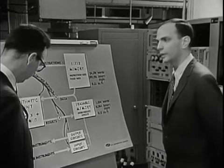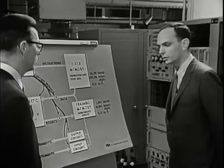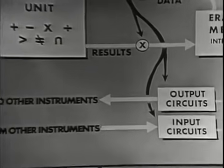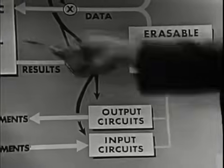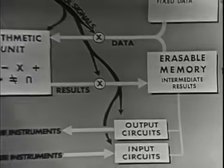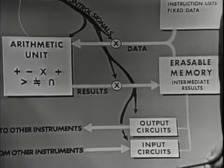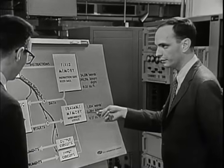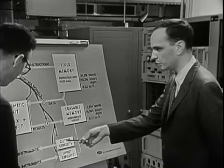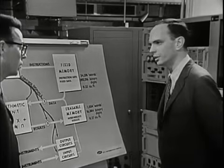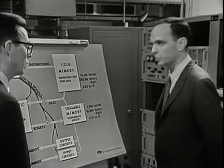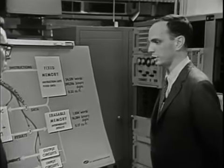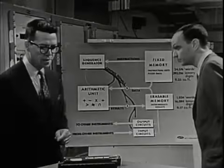This contains a list of instructions which are fed one at a time to the sequence generator, which generates all of the controls necessary to operate the entire computer. Input data, which comes from the angle-measuring devices or the keyboard, comes in through input conditioning circuits and is available in the erasable memory. The arithmetic unit can operate upon this input data and compute results designed to be output, which are sent through output conditioning circuits out to other instruments such as the displays or perhaps a rocket motor.